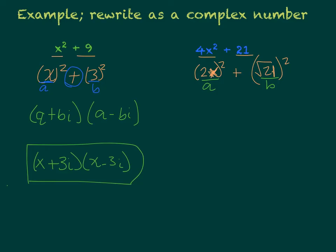So now to actually write it out, my a term is 2x. So we're going to take 2x plus my b term times i and 2x minus my b term times i. So my b term was the square root of 21, so i times square root of 21 and i times square root of 21. So now we have factored out that quadratic equation.